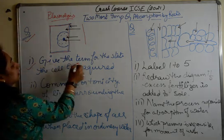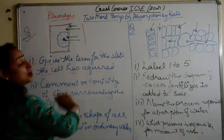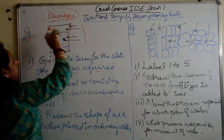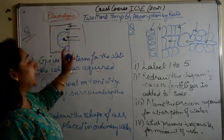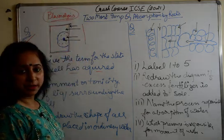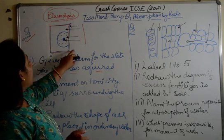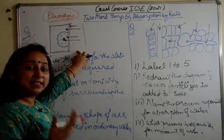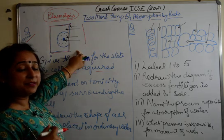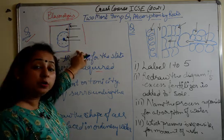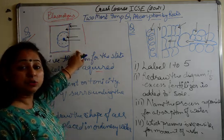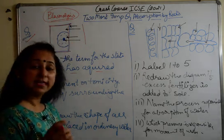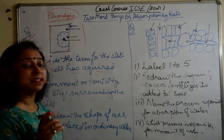One question here is: give the term for the state the cell has acquired. The answer would be plasmolysis — students often make the mistake of writing 'shrinkage' instead. Sometimes they ask you to identify which type of cell this is — animal or plant. You have to say there is no change in the shape of the cell because of the cell wall, hence it is a plant cell.